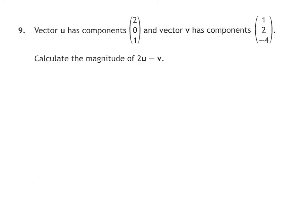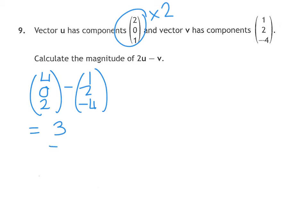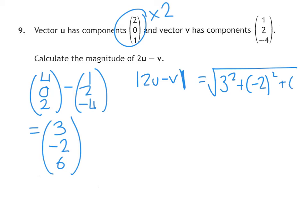Question 9 wants a magnitude of a vector. First thing I'm going to do is work out 2u minus v. Doubling the first one gives me 4, 0, 2, take away 1, 2, minus 4. 4 take away 1 is 3, 0 take away 2 is minus 2, 2 minus minus 4 becomes 2 add 4 which is 6. The magnitude is then when you take each of those numbers and you square them under a square root sign. That gives us 9 plus 4 plus 36, which is the square root of 49, which is 7.